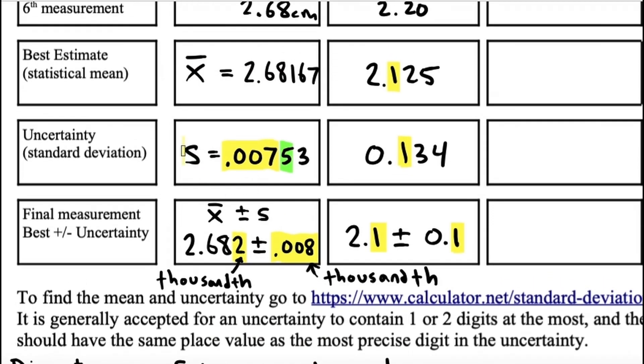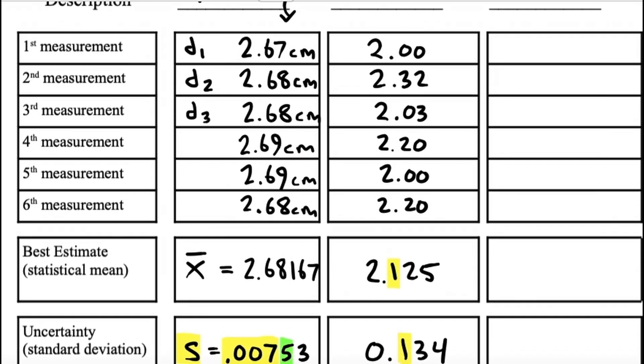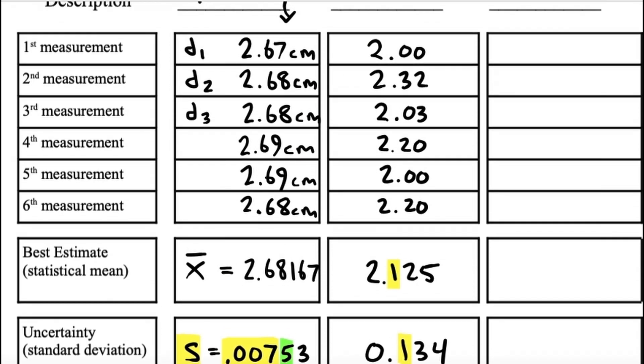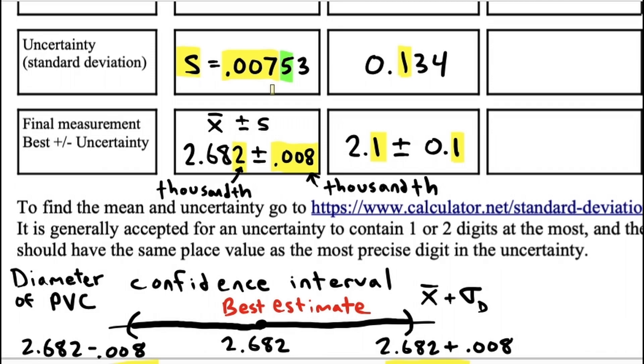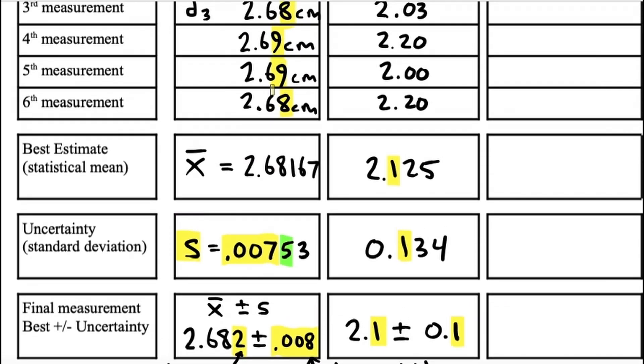Which is going to be this number right here. So, what we want is we want 2.682 plus 0.008. Then on the left side we do 2.682 minus 0.008. So, let me just calculate those real quick. We have 2.690 and 2.674.